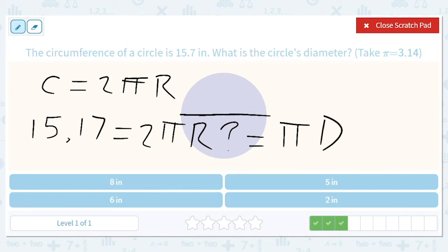We have to set this equal to 2πr, but that's also equal to just πd for diameter. So all we have to do is divide 15.7 by pi. We divide both sides by pi.